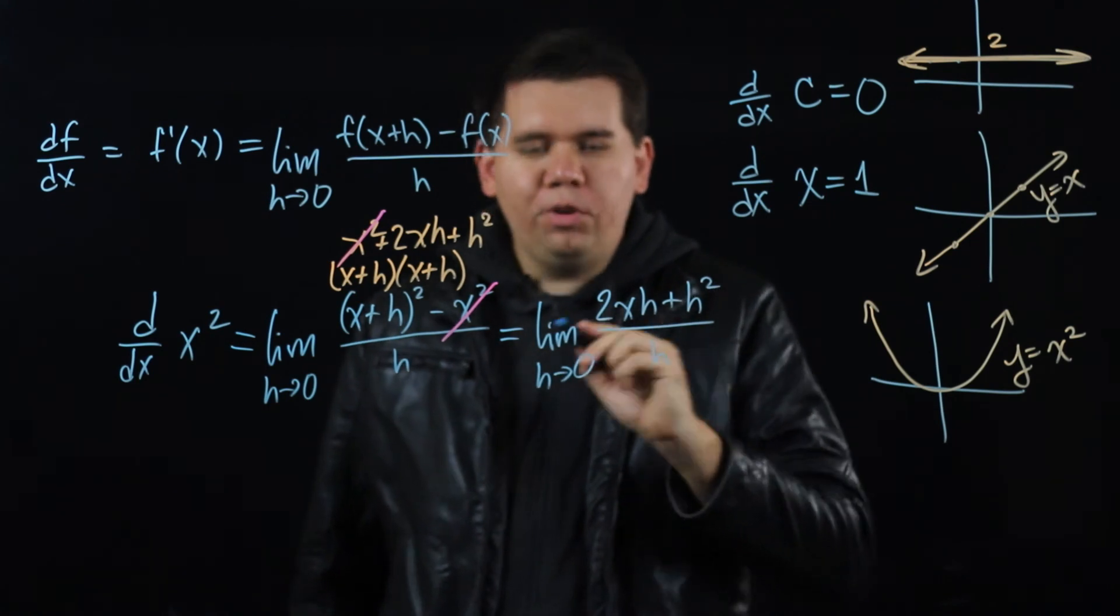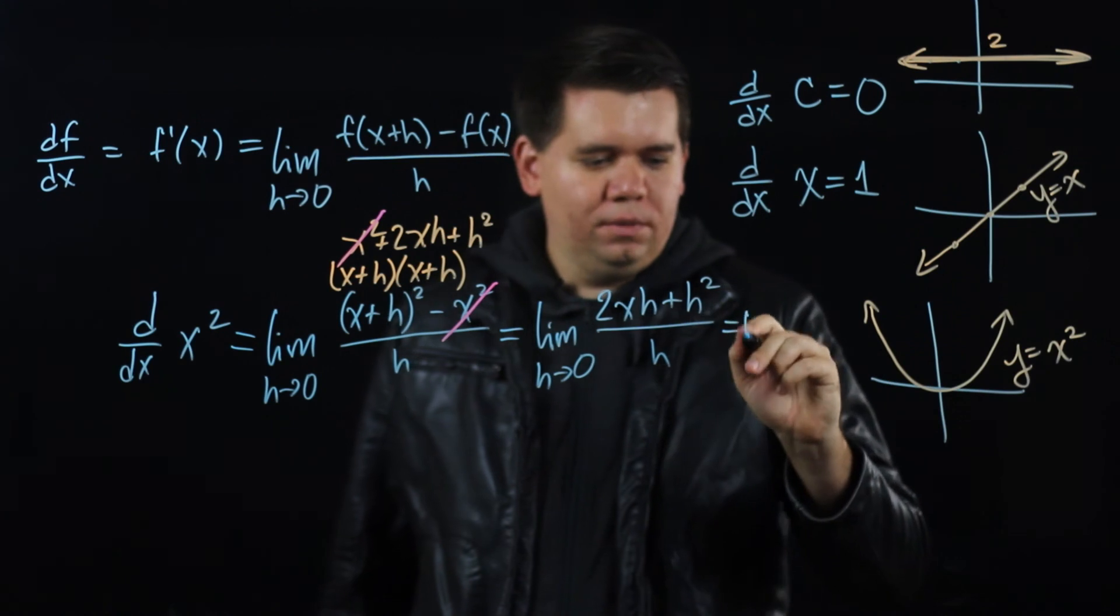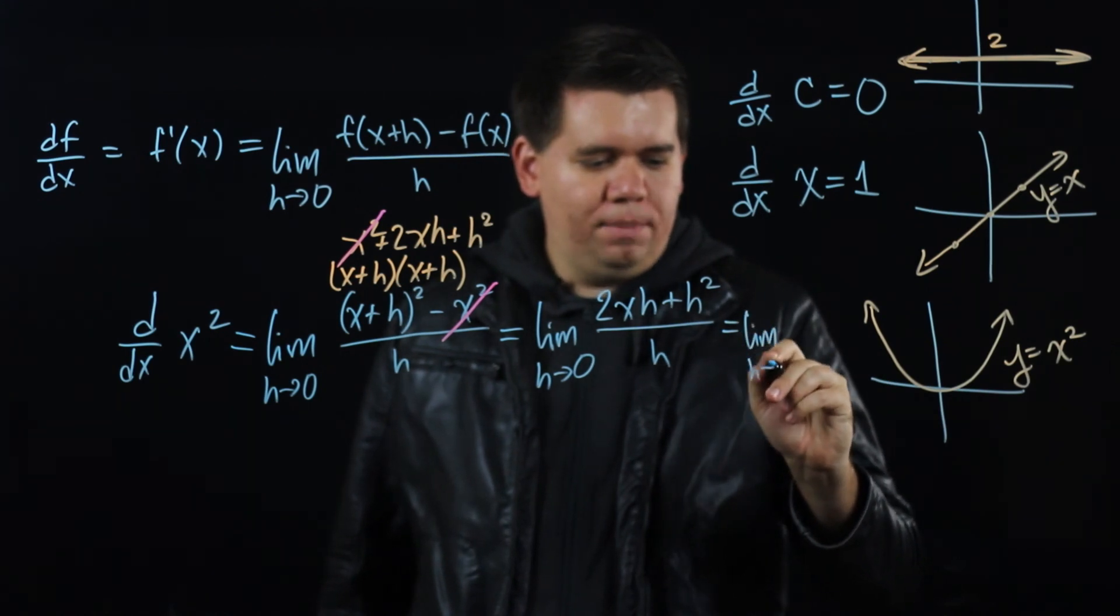Then divide through by that h. Both pieces have an h on top. So you can divide through with that h. And you get the limit as h goes to 0 of just 2x.